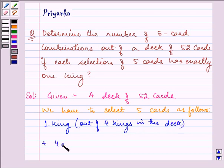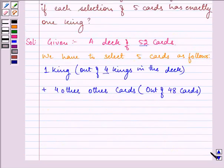Plus 4 other cards. And that is out of... now, out of 52, 4 has been out as kings.